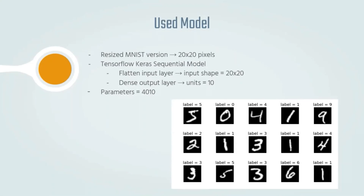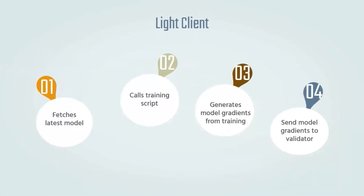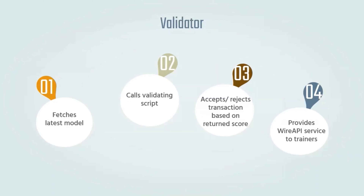The light client, representing the trainer, takes several steps each iteration: it fetches the latest model and uses it as a starting point for training on its own local data. After training, the model gradients are generated and sent to the validator. On the validator side, when it receives such an update, it aggregates this update with the latest model and calls the validation script. Based on the verdict, an update is either accepted or rejected. A validator also exposes the details of the blockchain as an API service using the wire API.